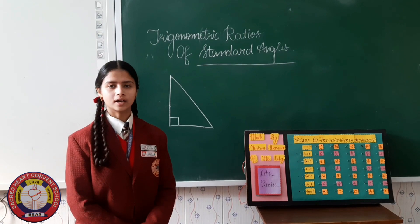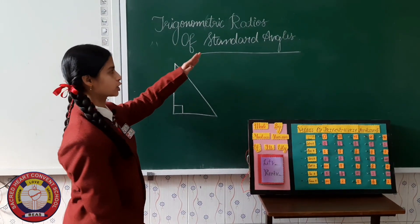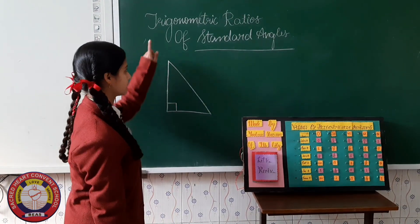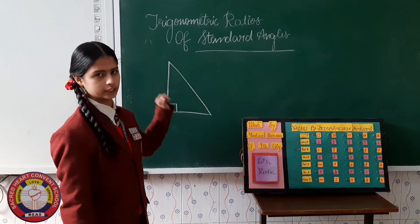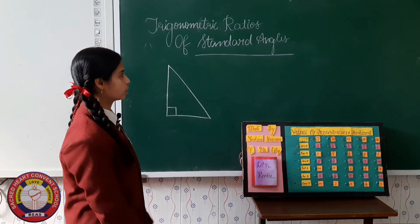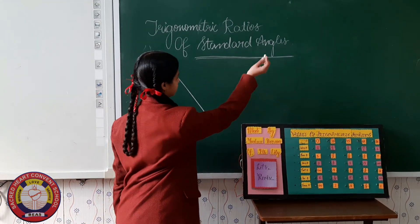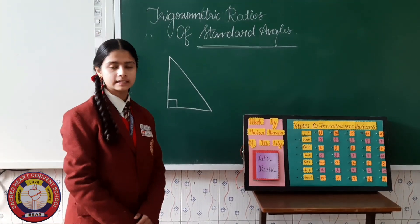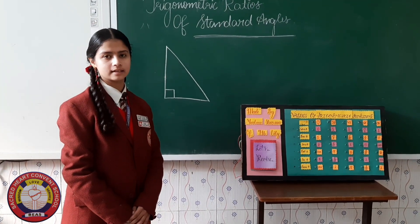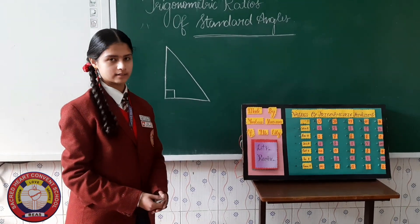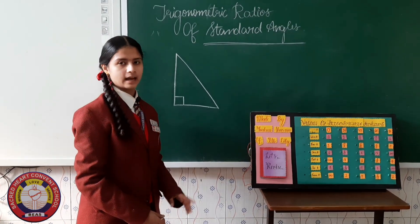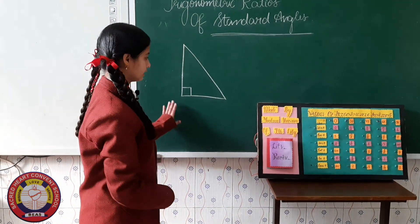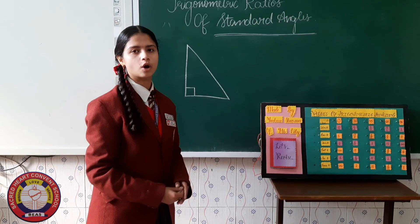Now let us talk about the concept of trigonometric ratios of standard angles. We have already discussed trigonometric ratios in the previous chapter. Today our main focus would be on the standard angles. Trigonometry is applicable in a right-angle triangle — in fact, it is applicable to all triangles. It is the study of triangles. For finding the three sides — hypotenuse, base, and perpendicular — the most important part is the angles.